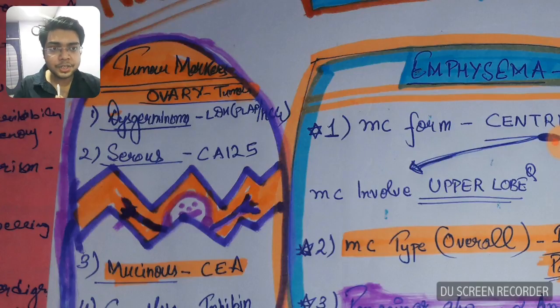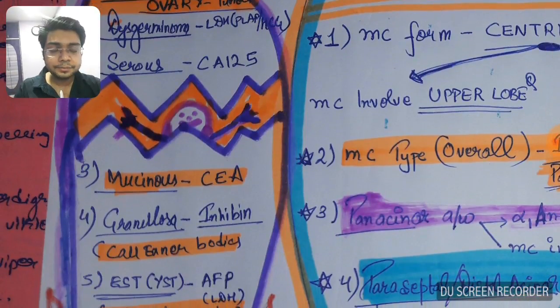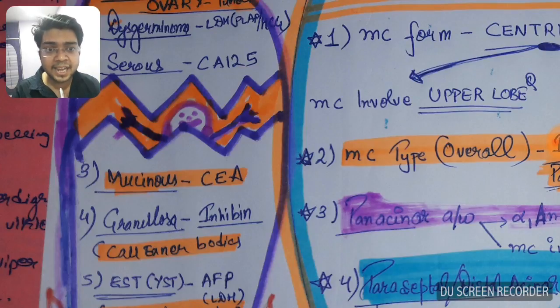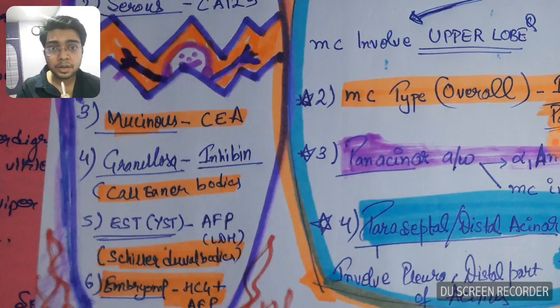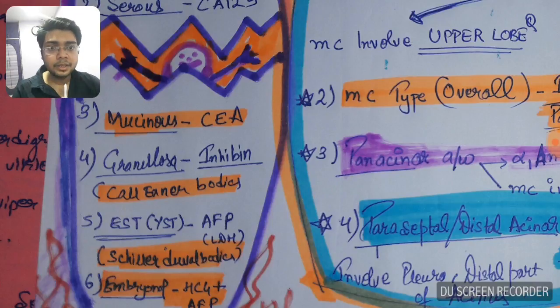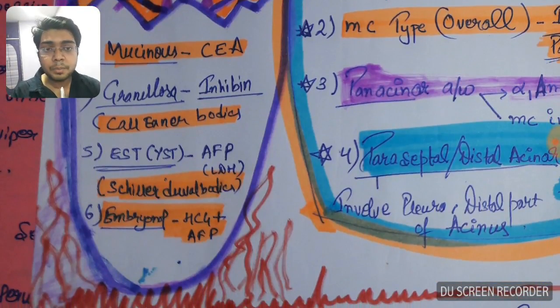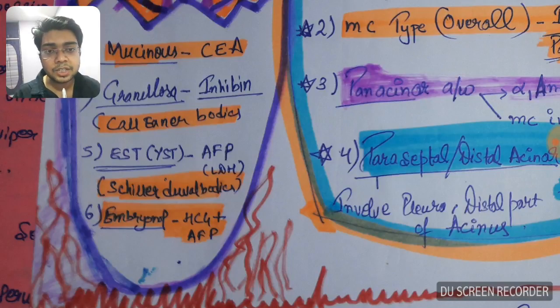Do remember these: germinoma for LDH in bracket, PLAP, or HCG; serous for CA-125; mucinous carcinoma for CEA; granulosa having Call-Exner bodies, tumor marker is inhibin.